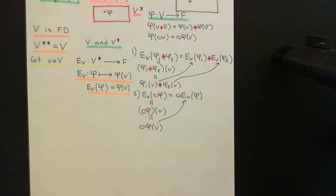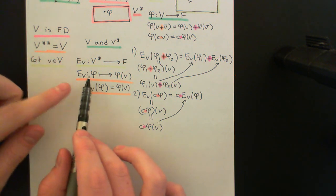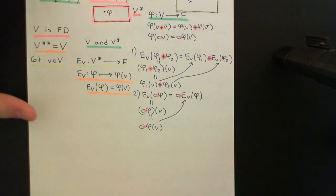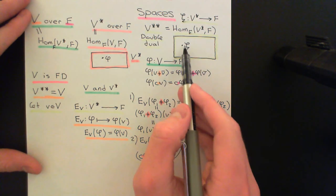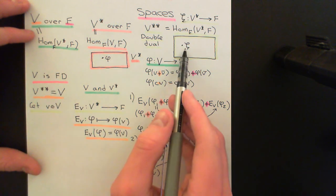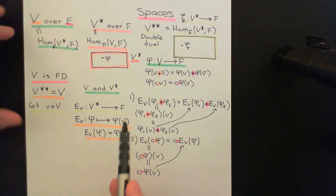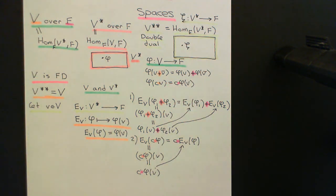We've succeeded in showing that any vector v in the original vector space V over F can be associated with one of these evaluation functions E_v, which maps all covectors onto elements of the field linearly. These evaluation functions are linear maps and so belong to the double dual space V**. That's the first part. Now we want to show the reverse: that any element zeta of the double dual space can always be associated with some vector in our original vector space V over F. We'll have a break and come back to this in the next video.